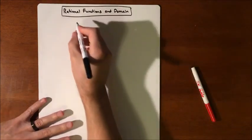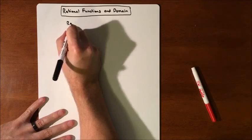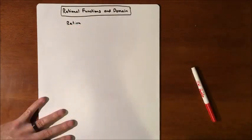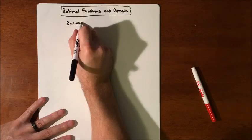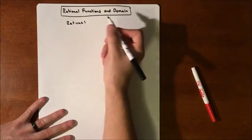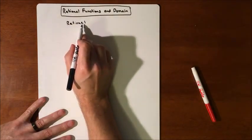So a rational function is basically a fraction. A rational is going to be a fraction, something that can be written as a fraction.